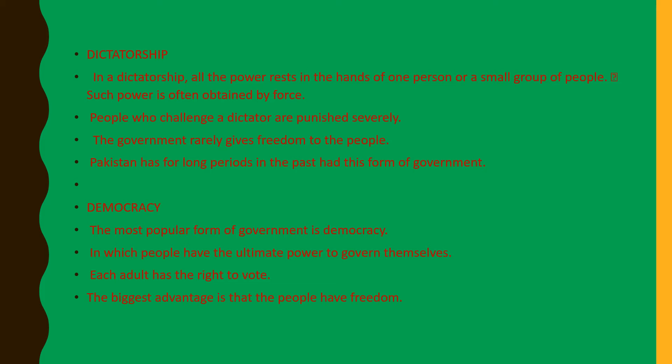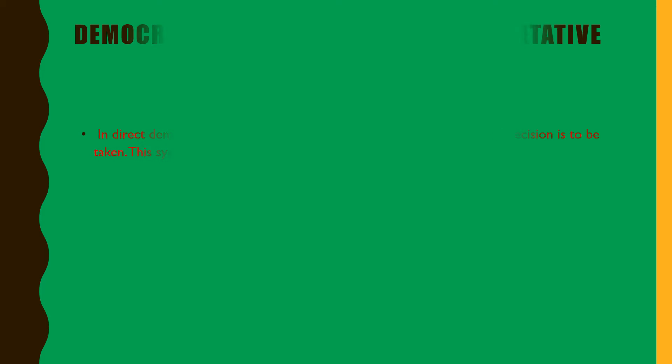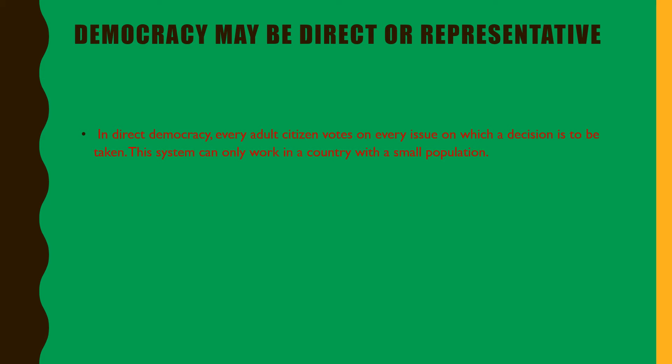Democracy. The most popular form of government is democracy, in which people have the ultimate power to govern themselves. Each adult has the right to vote. The biggest advantage is that the people have freedom. Democracy may be direct or representative.